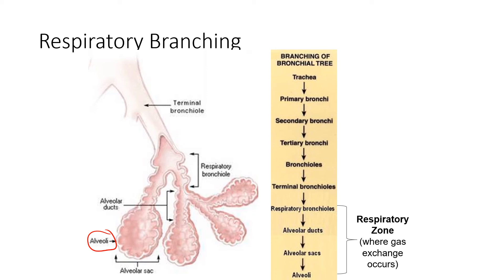From there, the pathway is arteries, arterioles, systemic capillaries, venules, veins, superior and inferior vena cava. And then we're back to the heart with the right atrium.